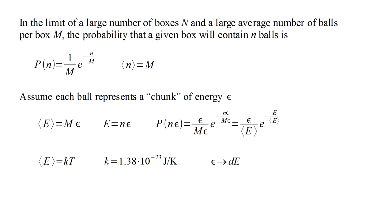Finally, we let our chunk of energy epsilon shrink to infinitesimally small. We'll call it DE, the differential of energy. This describes a continuous exchange of energy among the particles. The resulting probability that a molecule will have an energy E is 1 over kT times e to the minus E over kT. This is called the Boltzmann distribution.